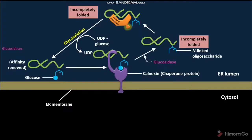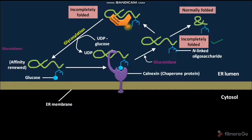In the next step, a glucosidase removes the terminal glucose molecule in the N-linked oligosaccharide of the incompletely folded protein. As a result, the incompletely folded protein is released from calnexin. This cycle repeats until the protein has folded completely — that is, the cycle stops when a completely folded or normally folded protein is formed.